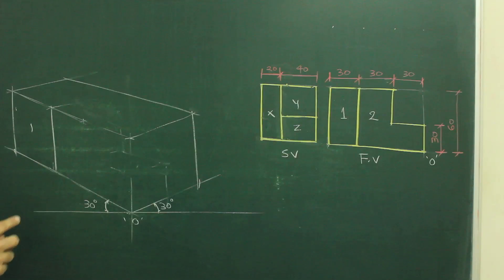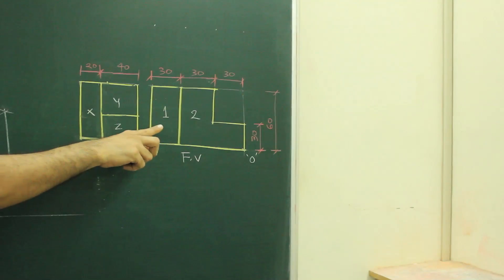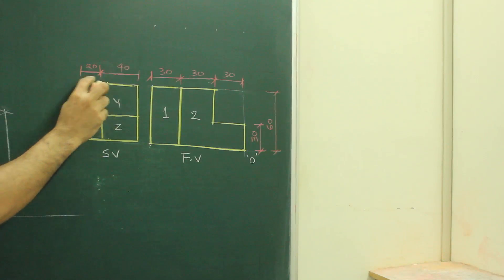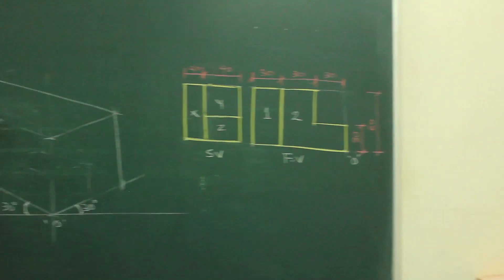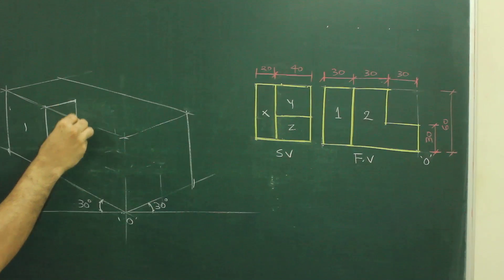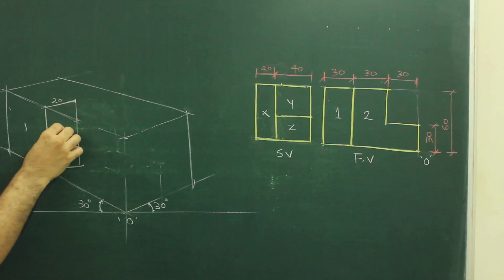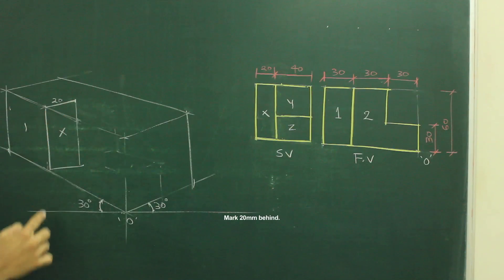Now if you see the diagram, part 1 is there that I have drawn. With that part 1, I have this X part. How much I have to go inside? 20. So if I will go 20 behind, I will get part X. So I got this part X.